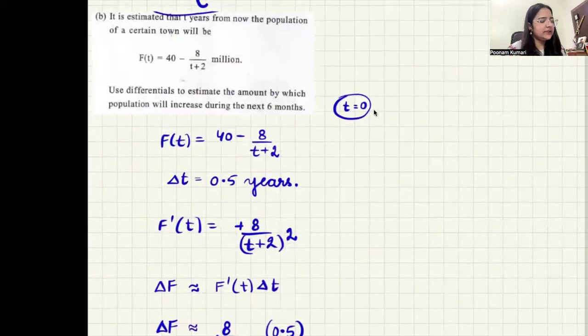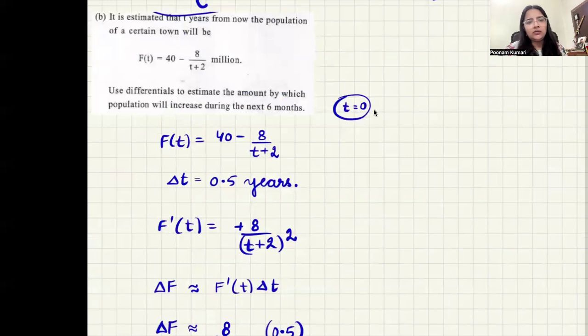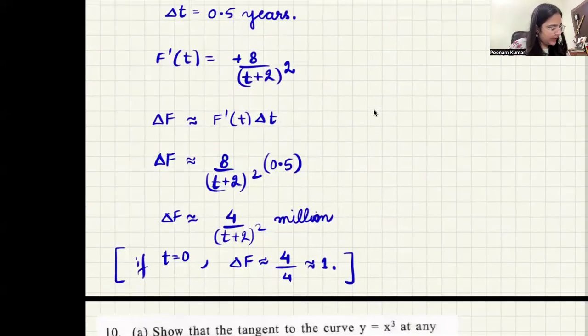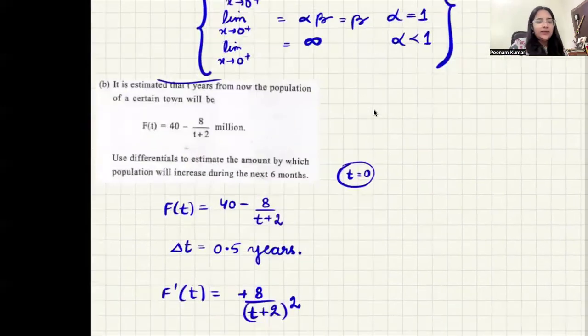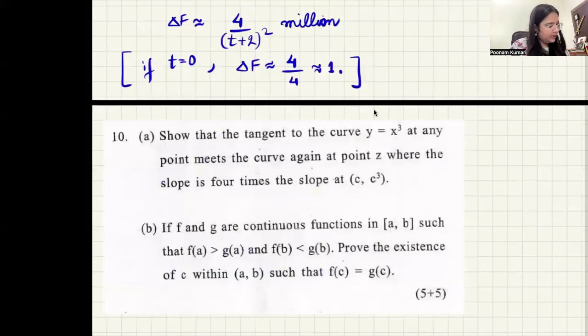So basically the function is going to change by one unit. That means population will increase by approximately one million in the next six months if time period starting from zero. So that was part number b.